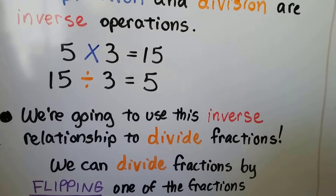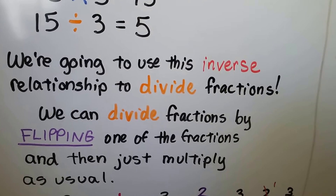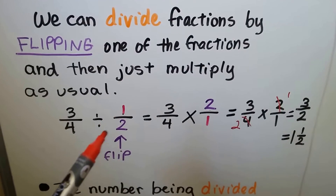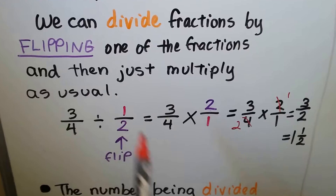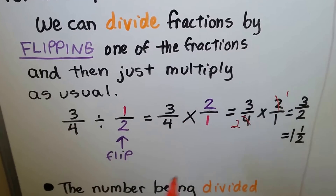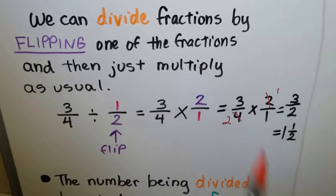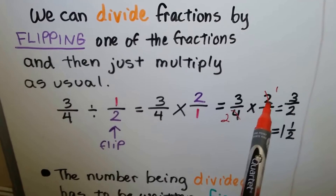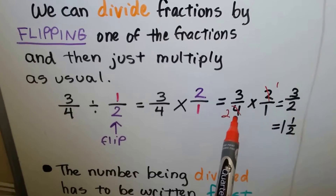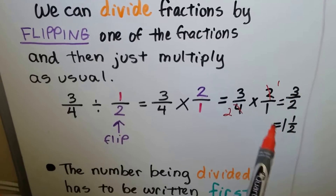We're going to use this inverse relationship to divide fractions. We can divide fractions by flipping one of the fractions and then multiplying as usual. So if we have 3/4 divided by 1/2, we flip the 1/2 to become 2 over 1, and replace the division sign with a multiplication symbol. Now we have 3 times 2 which is 6, over 4 times 1 which is 4 — that's 6/4. We can also do cross canceling: there's one 2 in 2 and two 2s in 4, so those become 1 and 2. Then 3 times 1 is 3 over 2 times 1 is 2 — that's 3/2, or 1 and a half.